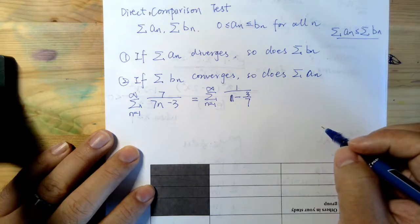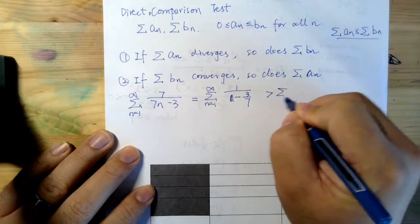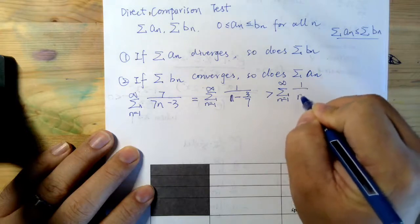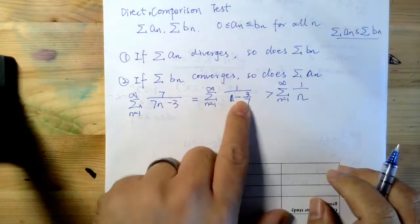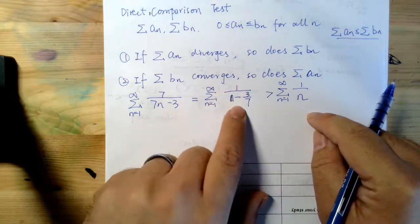And very naturally, we can get this inequality relationship, which is greater than 1 over n. Because this denominator is smaller, so overall the reciprocal is larger.